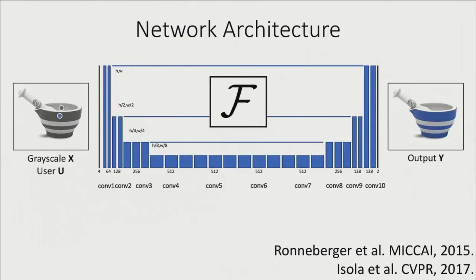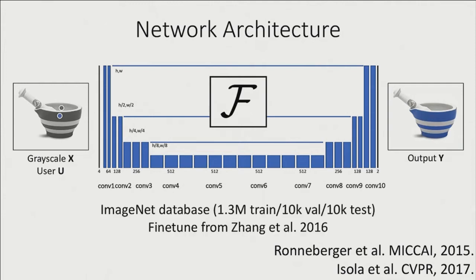Here's a quick glance at our network architecture. There's nothing too special — we follow current best practices, so we refer you to our paper for additional details. We train on the ImageNet database and fine-tune some layers from our previous work in ECCV 2016.